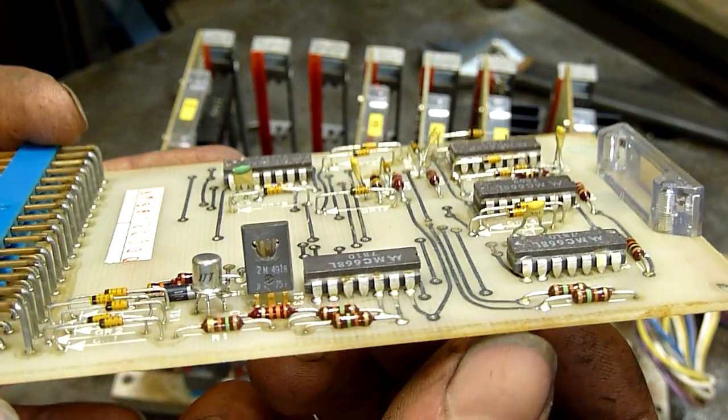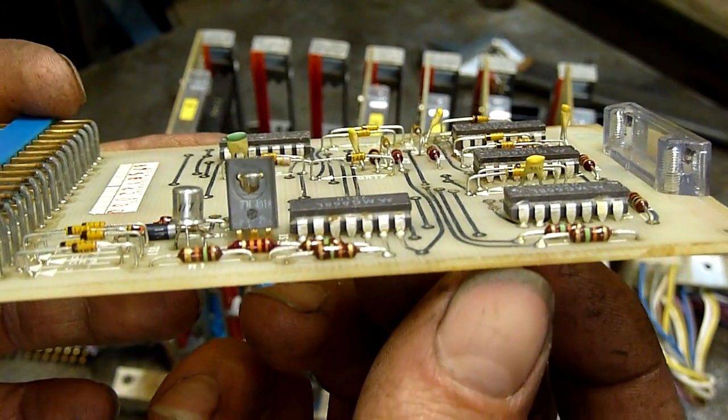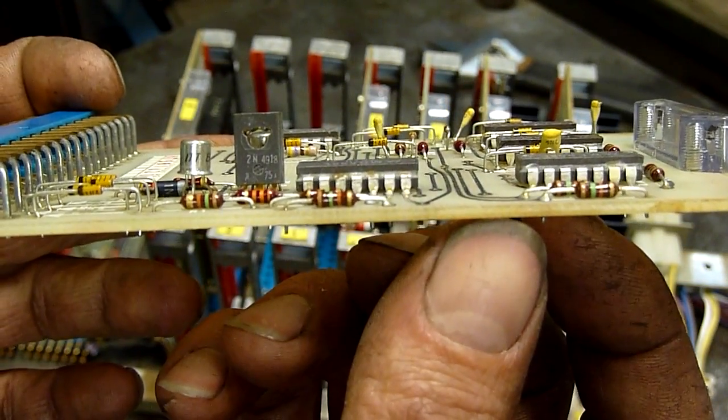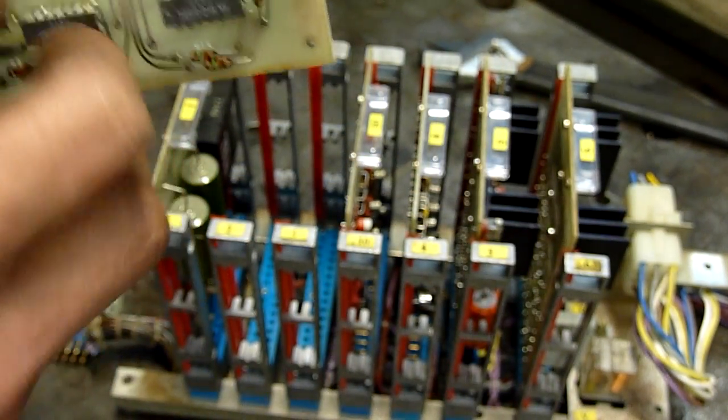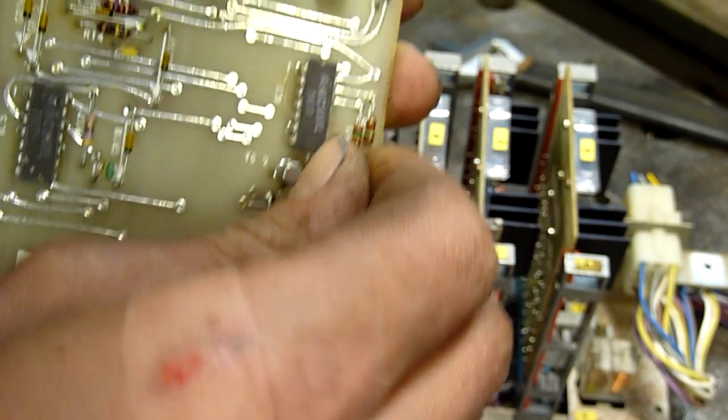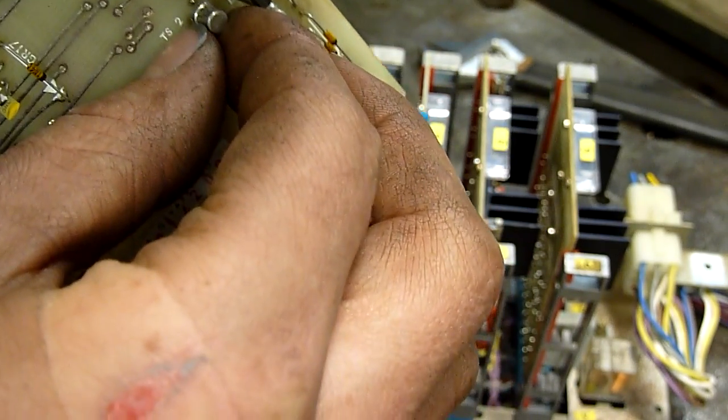That one there, it's 2N4918. You really need to desolder some of these things to identify them properly.